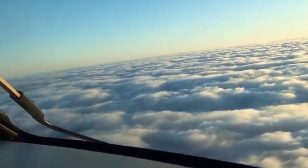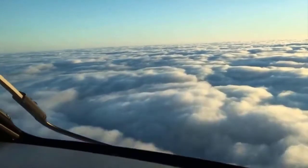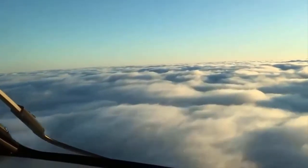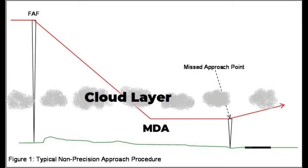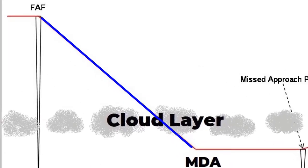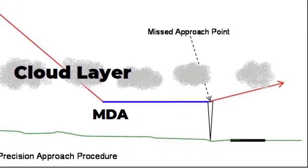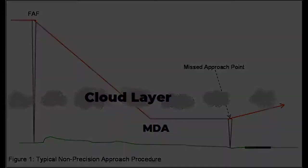Just a little backstory: non-precision approaches are approaches where pilots get horizontal guidance telling them how far left or right of course they are from the centerline of a runway, but no vertical guidance telling them how far above or below a certain glide slope they are. Because of this, many pilots have been taught to dive to get below the weather, get to their minimum descent altitude, and then drive in until visual with the runway. This method is called the dive-and-drive technique.